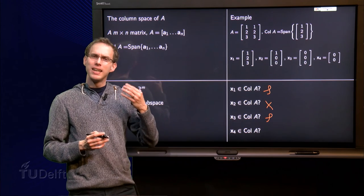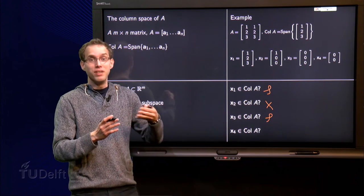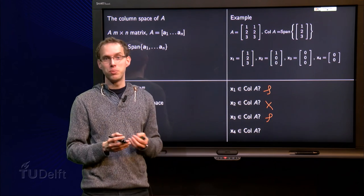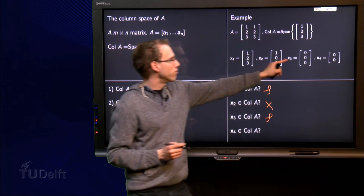Well, in fact, the column space is a subspace. And in a subspace, by definition, the 0 vector is. So we know that since we have a subspace, the 0 vector should be there. And then x4 is a nasty one.